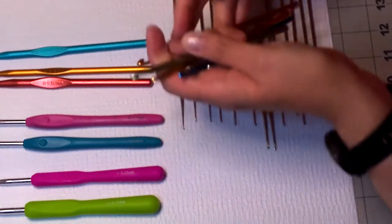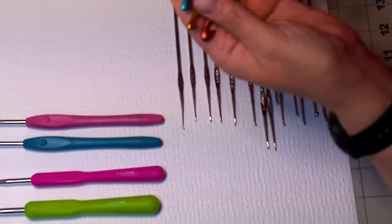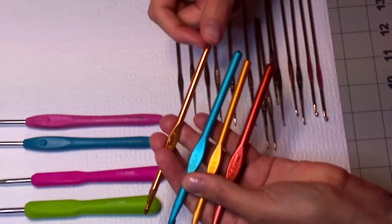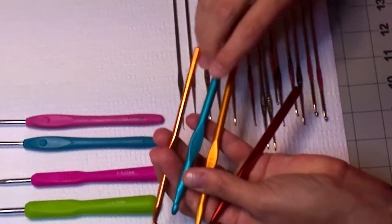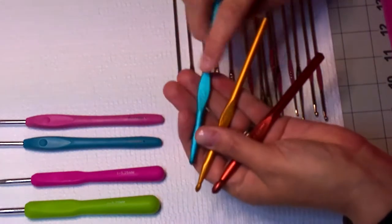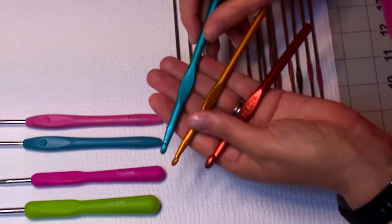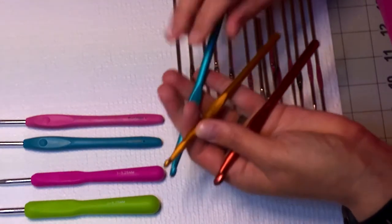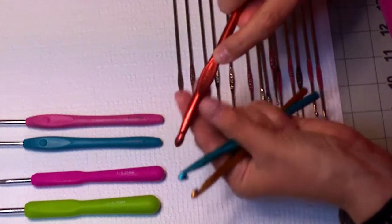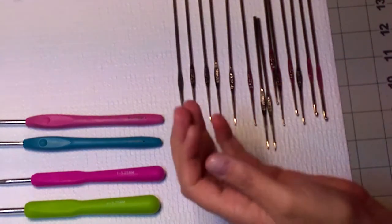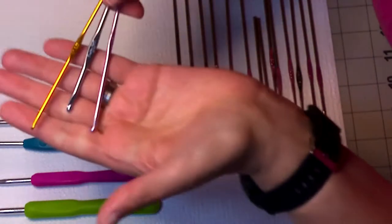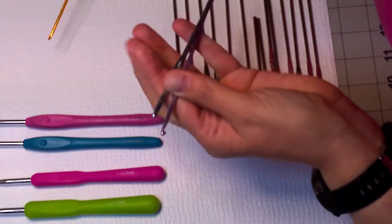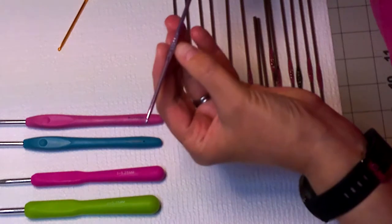There are also these type of aluminum hooks. With these you'll notice that it's a shiny aluminum and these are just a flatter finish aluminum, nothing different other than the finish. These are a Boye brand. The J hook is a 6.0 millimeter, K hook is 6.5 millimeters, and the L hook is 9.0 millimeters.